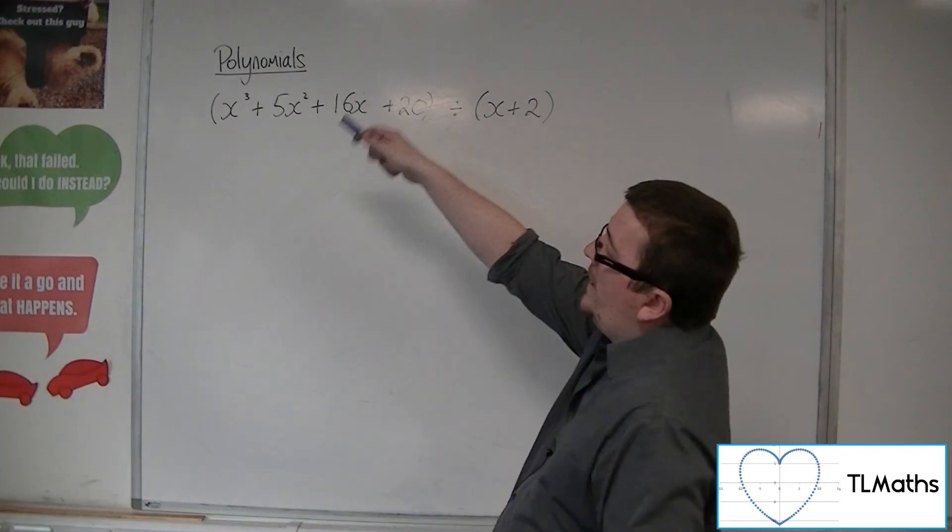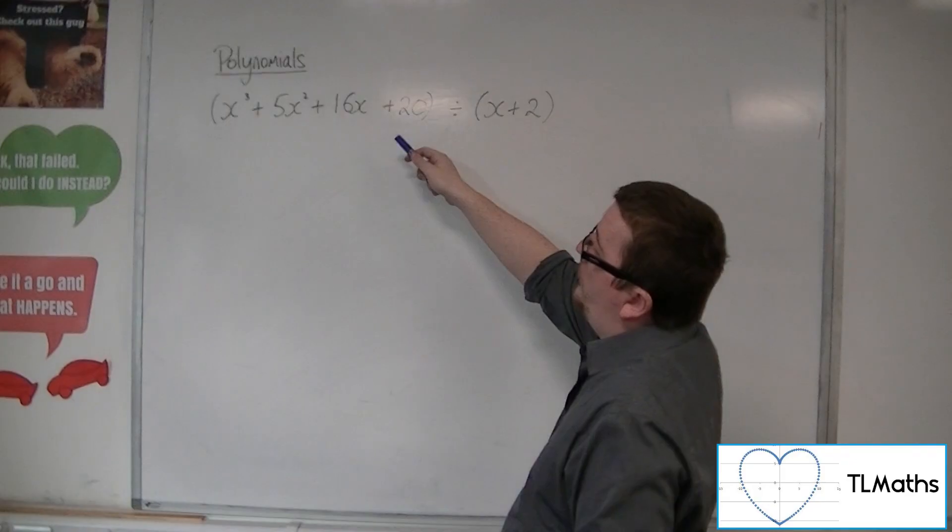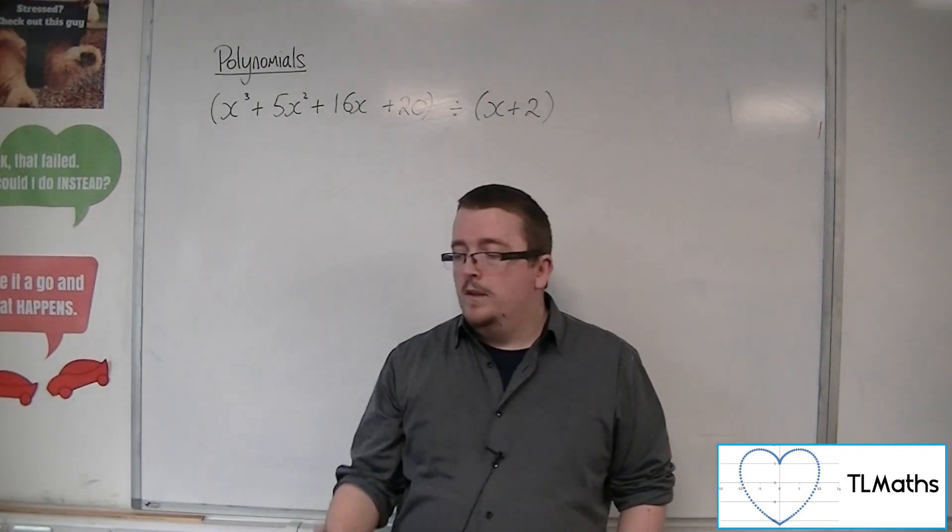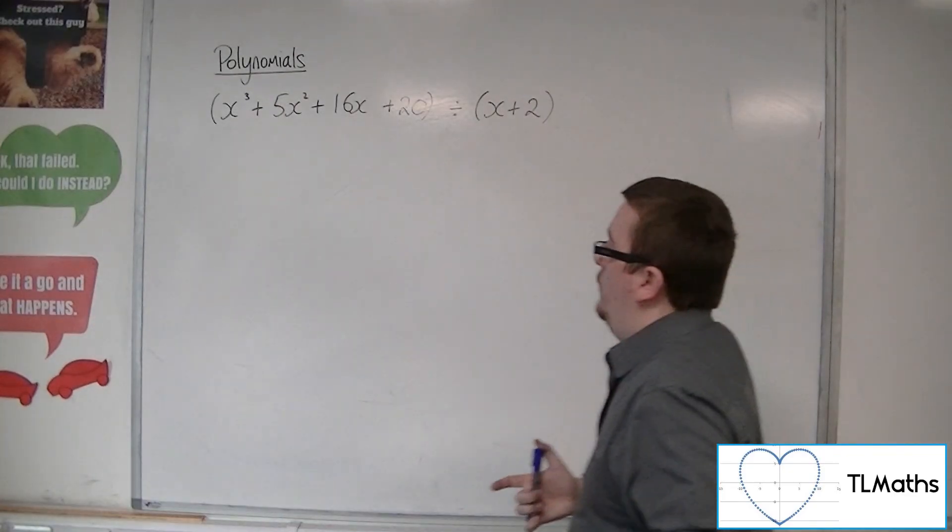So, what we're going to do is x cubed plus 5x squared plus 16x plus 20 divided by x plus 2. So, this is how the grid method works.